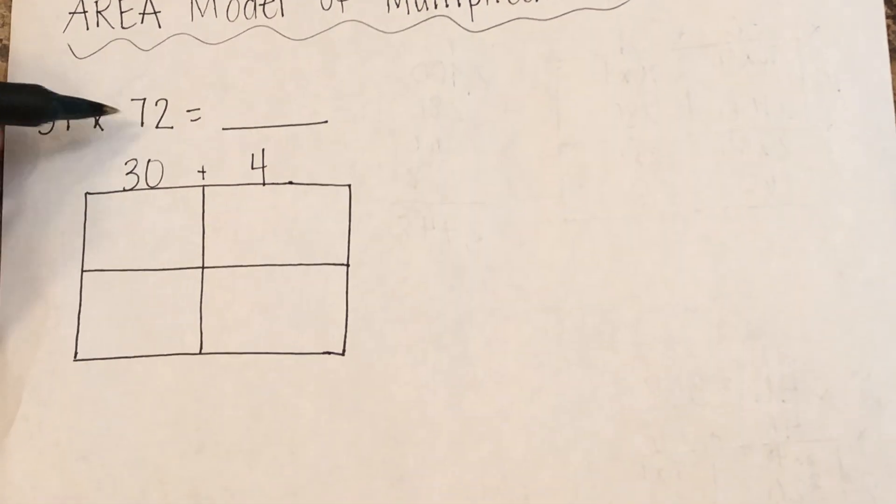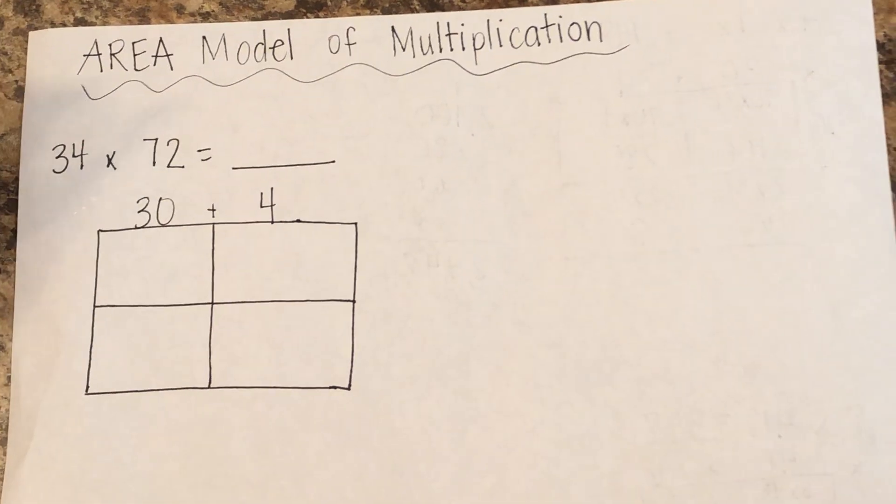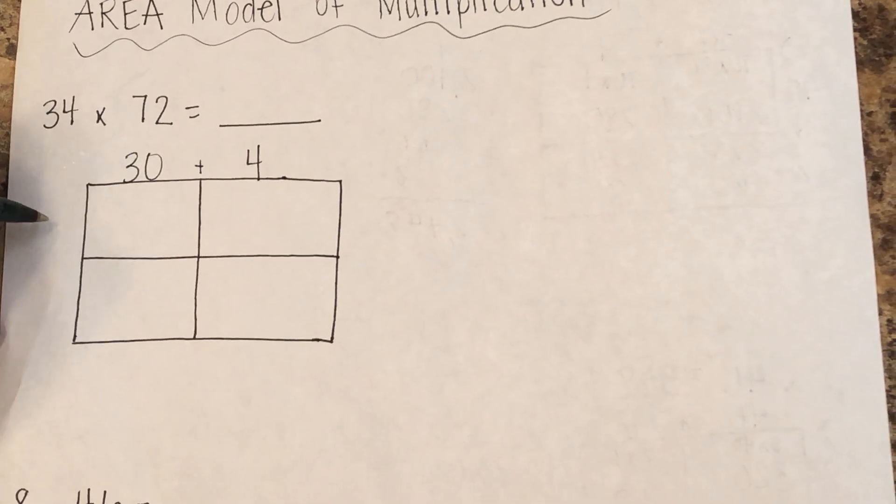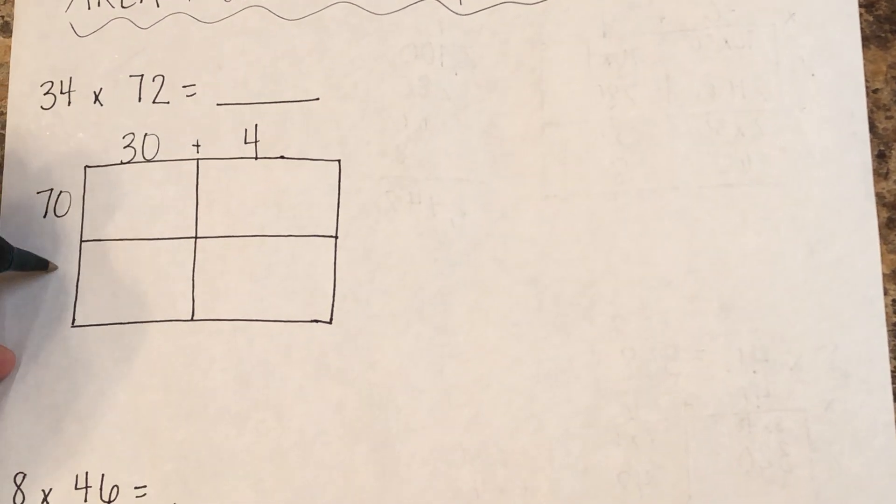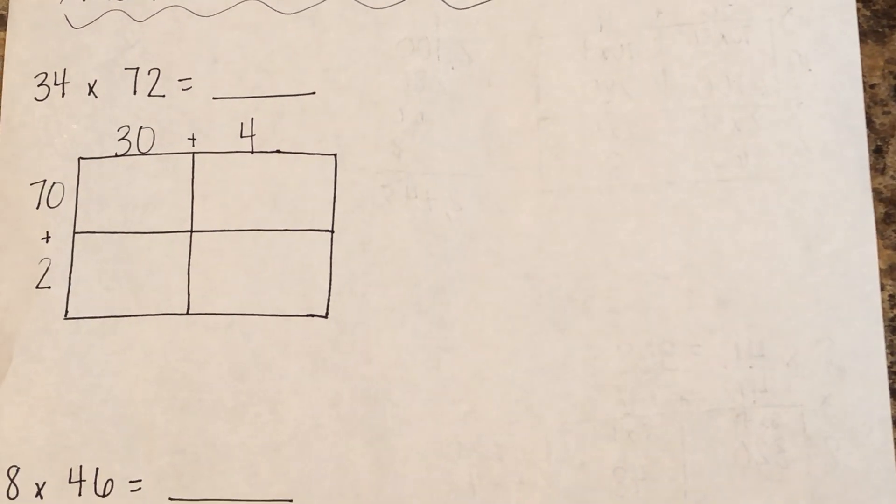On the other side, we have 72. In expanded form, we'd have 70 plus 2. The 7 is in the tens place, so its value is 70. The 2 is in the ones place, so its value is 2. So we have 70 plus 2.